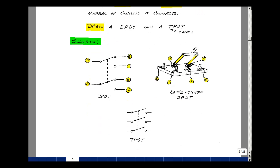A triple pull single throw switch would have three pulls, and connecting only one circuit with each pull. These are some of the descriptions of switches in supplemental problem 2.6.